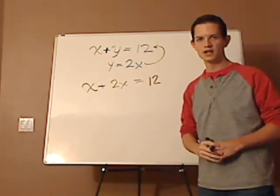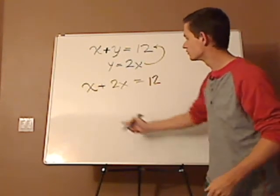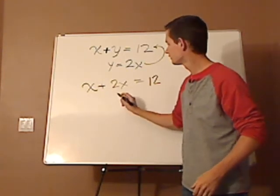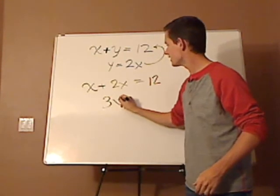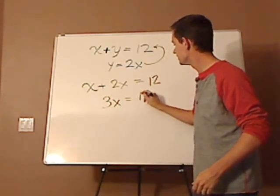And so what are you going to do next? You just add like terms. What's X plus 2X? 3X. And that's going to equal 12.